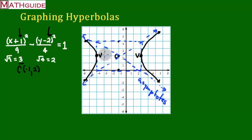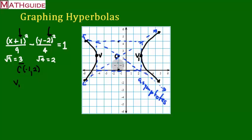Now that the branches are drawn, these two points where the branches start are the vertices — I'll label them. The two points above and below the center are not vertices; they're not part of the curve. The right vertex is V1 at (2, 2), and V2 on the left side is at (−4, 2).